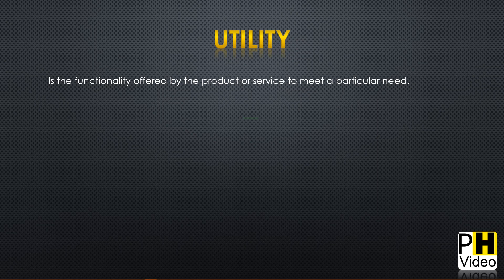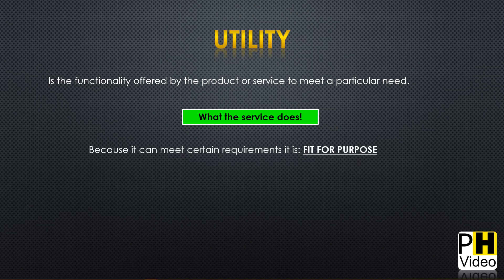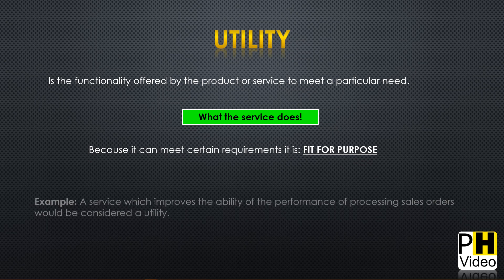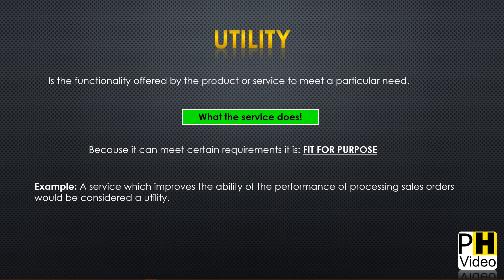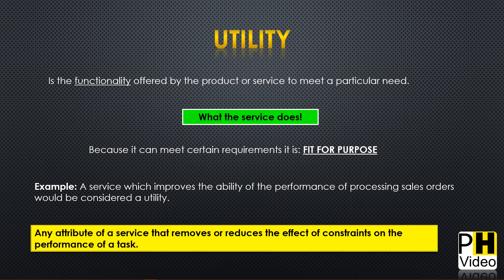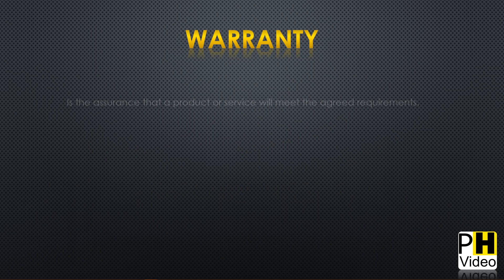Utility is what the service does — what it can do that meets certain requirements makes it fit for purpose. For example, a service that improves the ability to process sales orders is a utility. Any attribute of a service that removes or reduces the effect of constraints on performance is utility — you're removing constraints and improving performance.